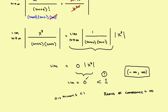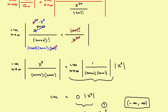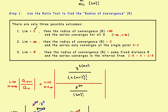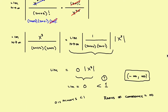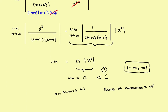If the limit turns out to be 0, that's the first case from our rules: the radius of convergence is infinity and the series converges for all x. So you can pick any x and this series will converge. In the next problem, we'll take a look at the case where the limit is equal to infinity. Follow these steps and you should come out with the right answer.